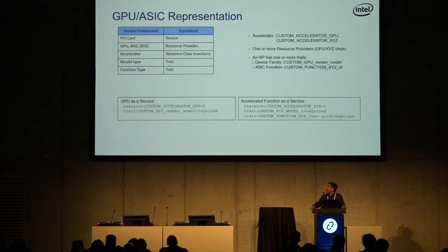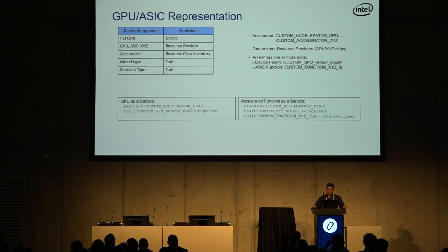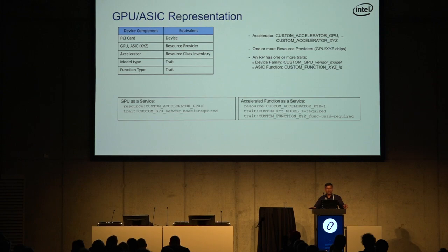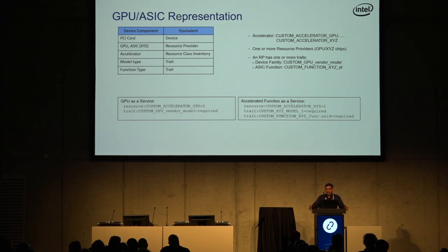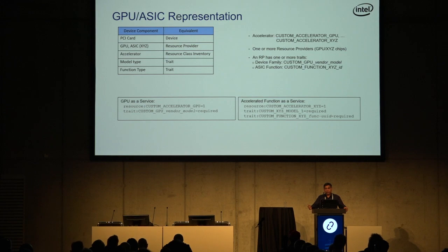To make it more concrete, here's an example with a GPU. The PCI card containing the GPU is what we model as a device in Cyborg — Nova doesn't know about it, it's not a placement concept. We track things like BMC or flash capacity in the PCI card at the device level. The actual GPU itself will be a resource provider. If you've got vGPUs, there will be multiple accelerators within that; otherwise a single accelerator of a GPU class. The model type — like NVIDIA Tesla or AMD Radeon 10 — would be a trait. For an ASIC like QuickAssist, the implemented functions can also be expressed as traits.